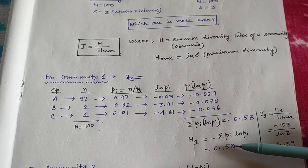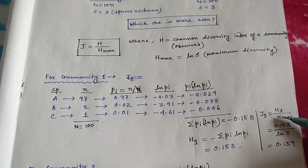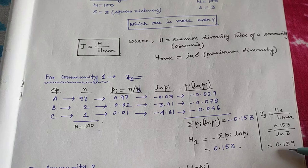Now, calculating the evenness index for community 1: J1 equals H1 divided by H-max, where H1 equals 0.153 and H-max equals ln(3). The value comes out to 0.139, which is very small, indicating that community 1 has a very low evenness index.